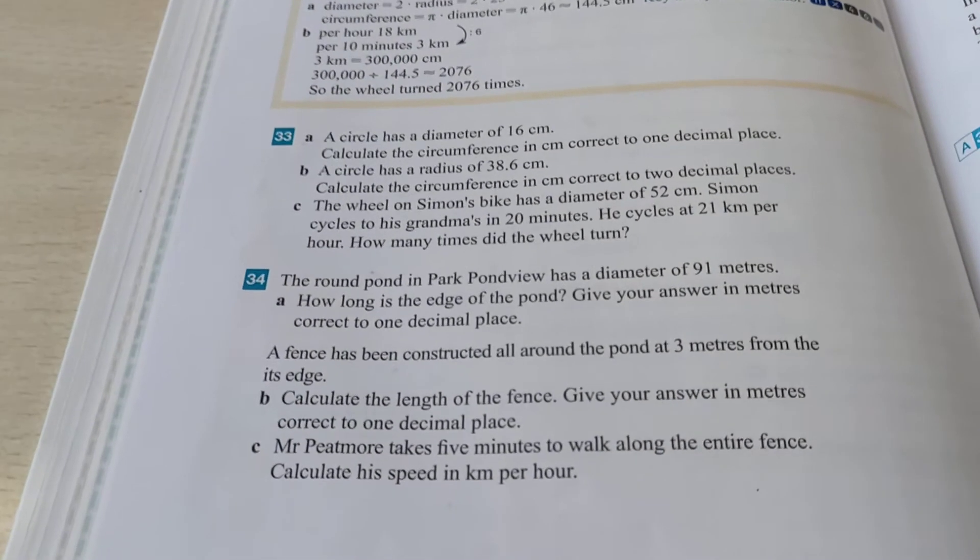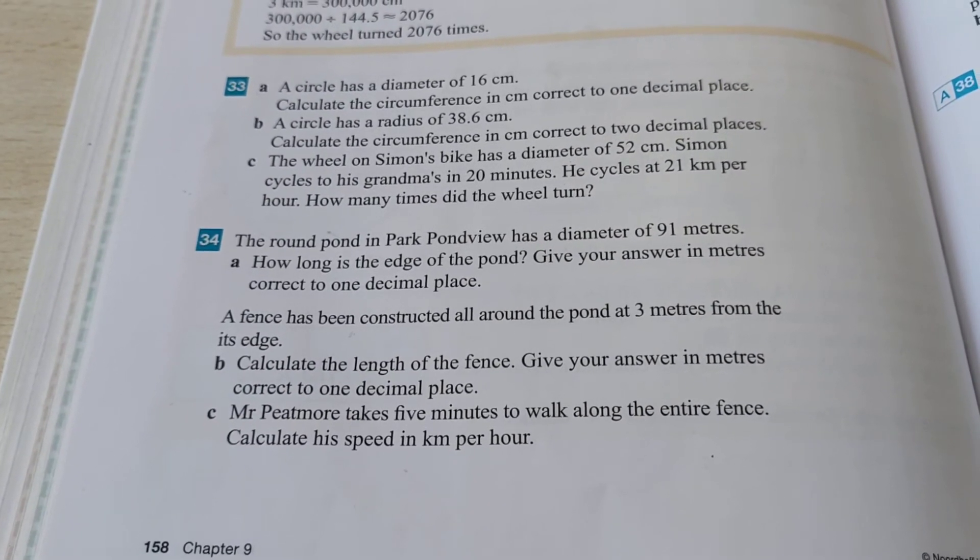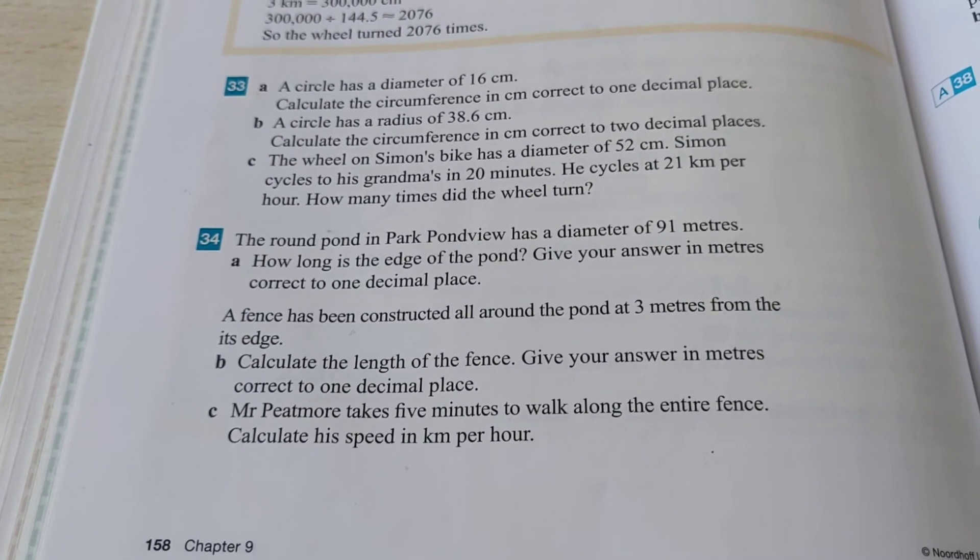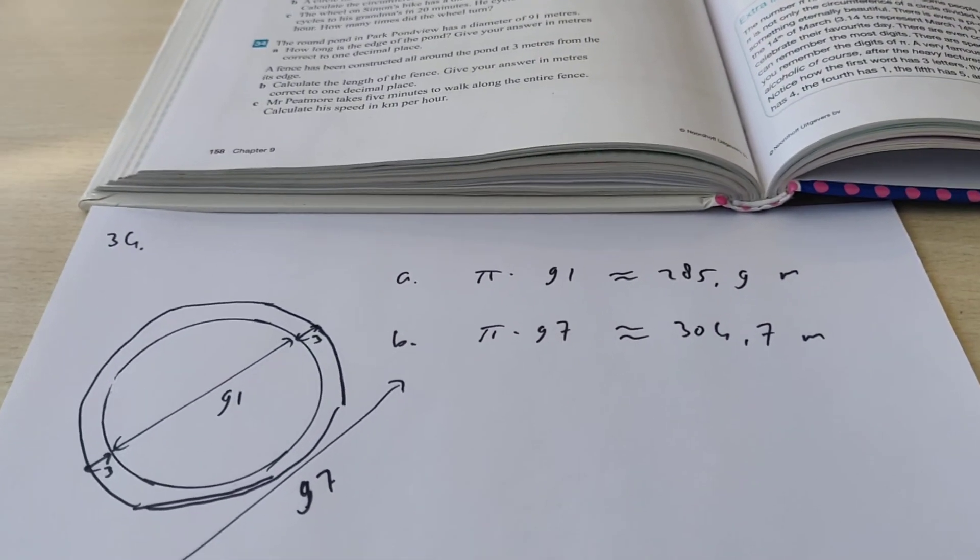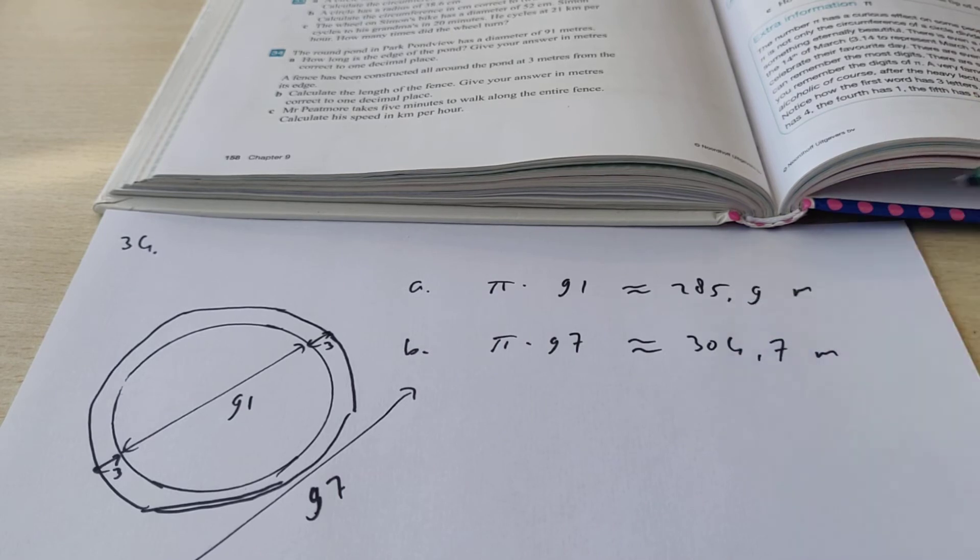Exercise C says: It takes Mr. Peatmore 5 minutes to walk along the entire fence. Calculate his speed in kilometers per hour. So in 5 minutes, Mr. Peatmore walks this distance. We want to know how much he walks in an hour. Now 5 minutes times 12 is 60 minutes, which is an hour.